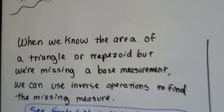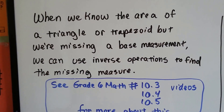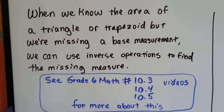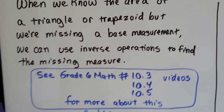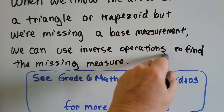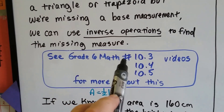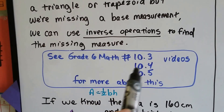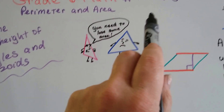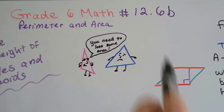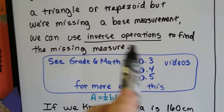When we know the area of a triangle or trapezoid, we know what the amount is, but we're missing a base measurement or a height measurement. We can use inverse operations to find the missing measure. If you're not familiar with inverse operations, you might want to go back to my grade 6 math number 10.3, 10.4, and 10.5 videos. Right now we're on 12.6.